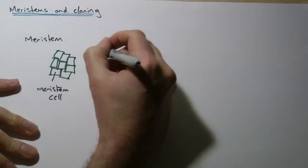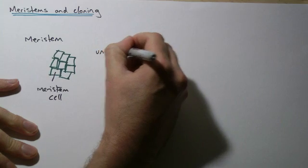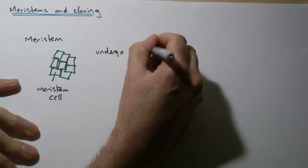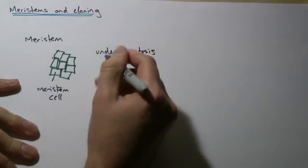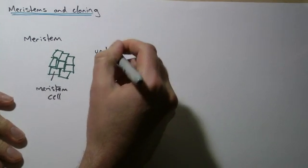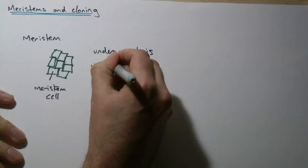Now the thing with meristem cells is that meristem can undergo mitosis so it can divide to make genetically identical copies of itself and it is unspecialized.